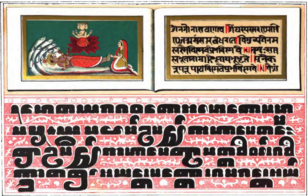Total assimilation, where one sound becomes identical to a neighboring sound, is of two types: progressive, where the assimilated sound becomes identical to the following sound, and regressive, where it becomes identical to the preceding sound.